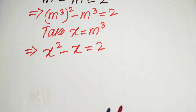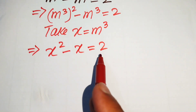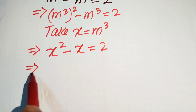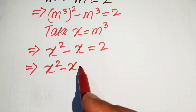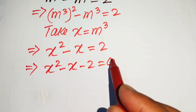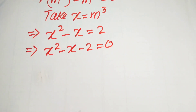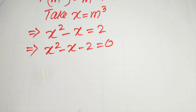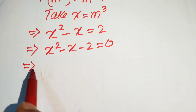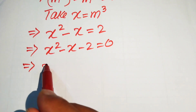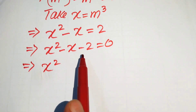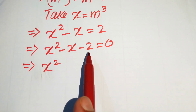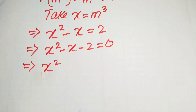In the next step, we move the 2 to the left hand side and it is written as x squared minus x minus 2 equals to 0. This is now a quadratic in the variable x. We break the middle term to make the factors — we need two numbers whose product is minus 2 and whose sum is minus 1.